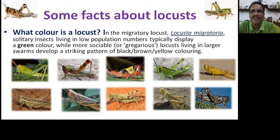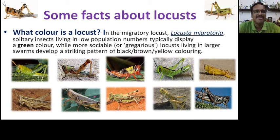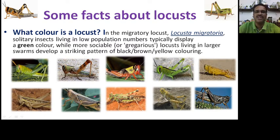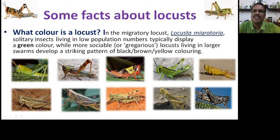What color are locusts? Just like a rainbow, they have different colors. In migratory locusts, solitary individuals typically display green colors. But as they become more gregarious, living in large swarms, they develop a striking pattern of black, brown, and yellow. So they don't have a single color — when socializing and breeding, they become quite colorful.